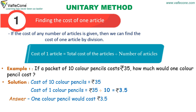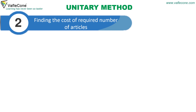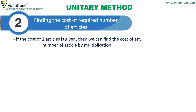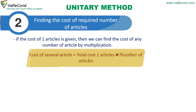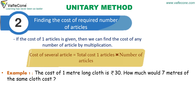Finding the cost of required number of articles: if the cost of one article is given, then we can find the cost of any number of articles by multiplication. Cost of several articles is equal to cost of one article multiplied by number of articles. For example, the cost of one meter of cloth is rupees 30. How much would seven meters of the same cloth cost?